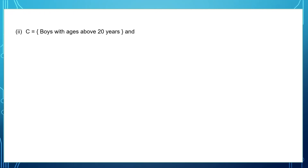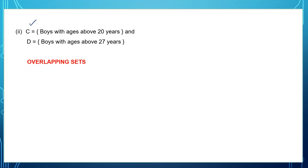Second one: Set C is boys with ages above 20 years and Set D is boys with ages above 27 years. These two sets can be overlapping because boys above 20 years can also be 27 or above. So some boys will be common to both sets, making these overlapping sets. The reason is boys above 20 can also be boys above 27.